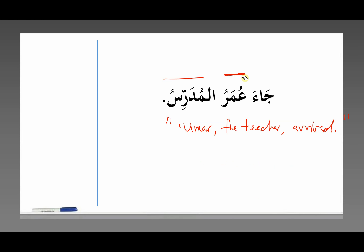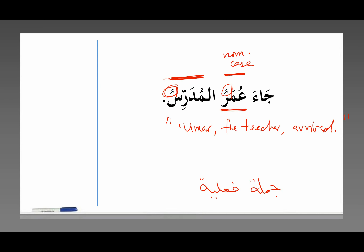Now I want you to notice: this noun here is in the nominative case, حالة الرفع. How do we know that? It has a damma — a good sign of a noun in the nominative case. But this noun here is also in the nominative case, as indicated by its damma, and it's clearly a noun because of the aleph lam. So we have two nouns in the nominative case within a جملة فعلية — a verbal sentence. Typically there's only one noun in the nominative case: the fa'il. Now we have another noun in the nominative case as well. What's happening?